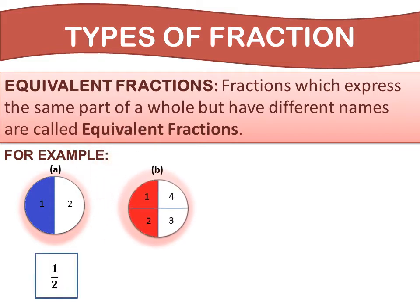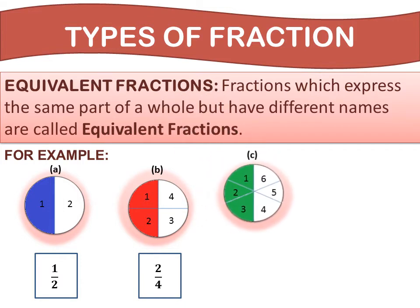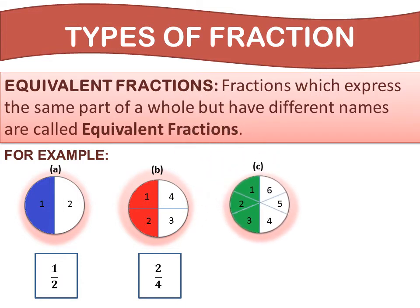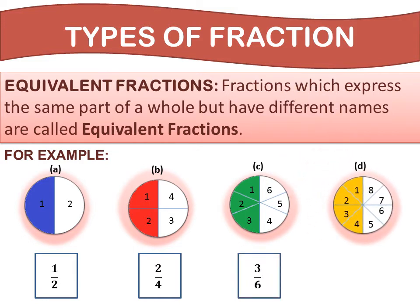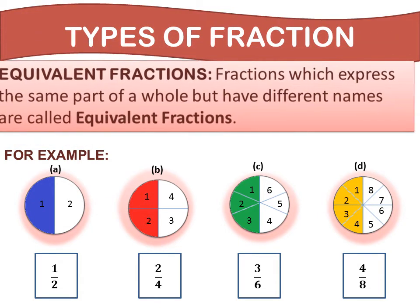In figure B, the circle is divided into 4 equal parts, so the fraction of the red part is 2 upon 4. In figure C, the circle is divided into 6 equal parts, so the fraction of the green part is 3 upon 6. In figure D, the circle is divided into 8 equal parts, so the fraction of the yellow part is 4 upon 8. So, what do you observe?